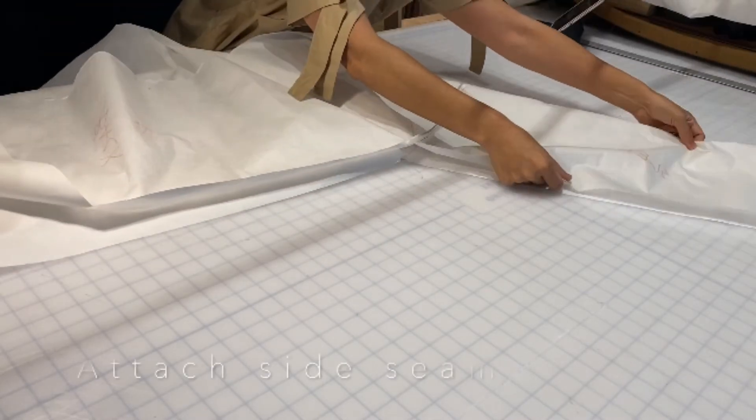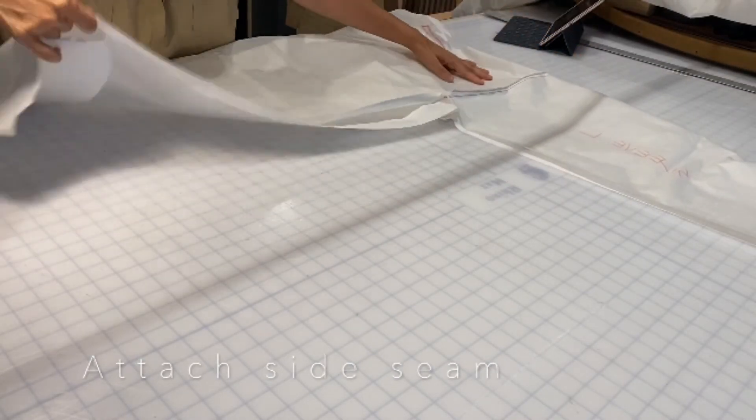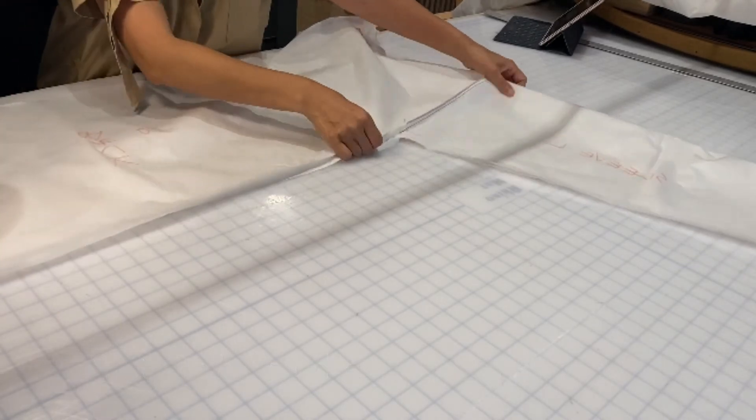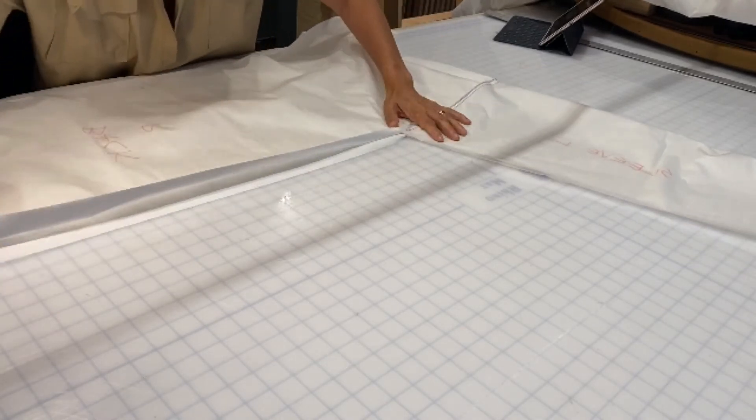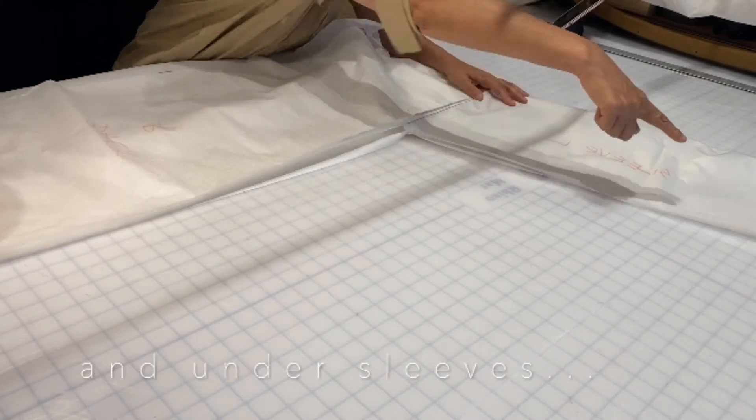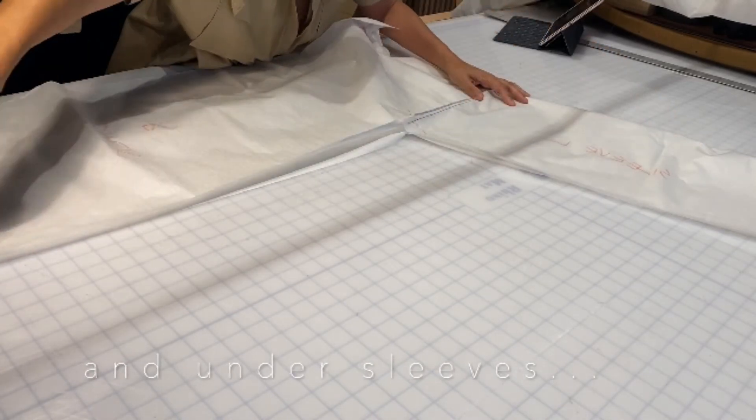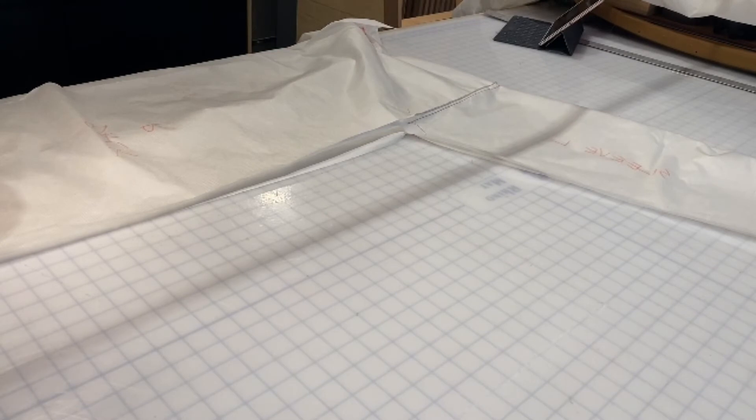We're going to lay out our front and back on top of each other. Now we almost have a finished garment. We just want to make sure that everything is lining up correctly on the sleeve and the side seam. Just making sure that everything looks good before you continue sewing.